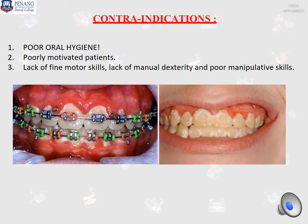Secondly, patients with poor motivation — in these cases, the patient themselves don't want any treatment at all, but are being pushed and forced by their parents, so you need to reassess such cases carefully. Thirdly, patients with lack of fine motor skills, lack of manual dexterity, and poor manipulative skill — sometimes these patients present with medical conditions such as Down syndrome. They have poor ability to use their hands in a skillful and coordinated way, so they cannot brush their teeth properly and cannot maintain good oral hygiene. Therefore, this is a contraindication for fixed appliance treatment.